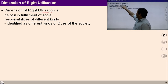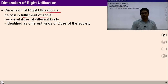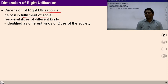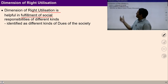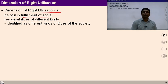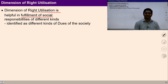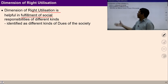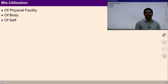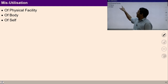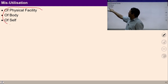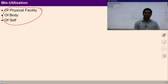The dimension of right utilization is helpful in fulfilling social responsibilities of different kinds. Once we ensure right utilization, it can be helpful in fulfillment of social responsibilities at the level of society. We should avoid mis-utilization of physical facility, body, and self.